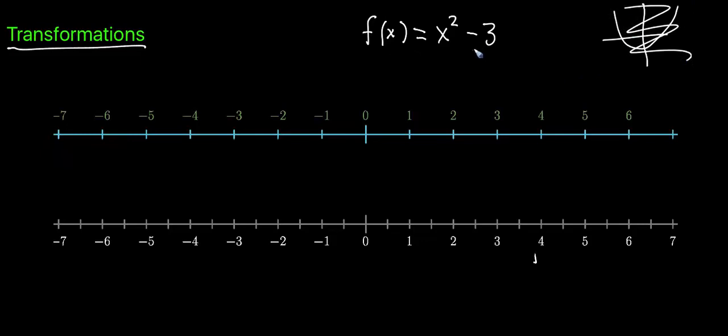I just want to say, how do the inputs move to those outputs? As an example, if you plug in zero, you're going to get negative three. Zero squared minus three equals negative three.